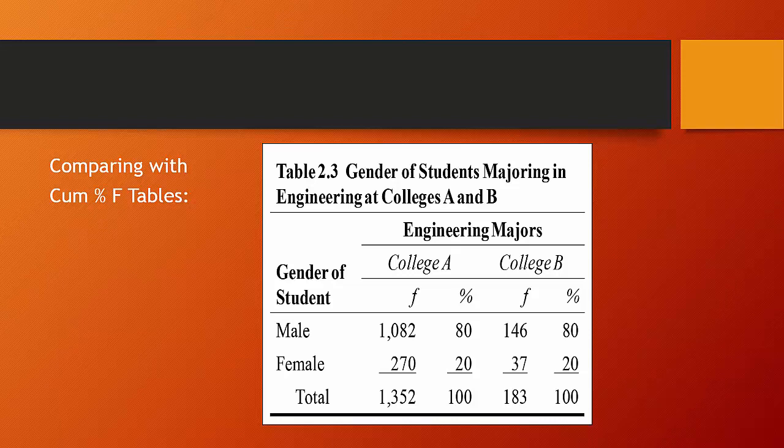And it might be claimed by College A that they admit 270 students who are female into their engineering program, and College B only admits 37. But you can see that when we convert them into percentages,